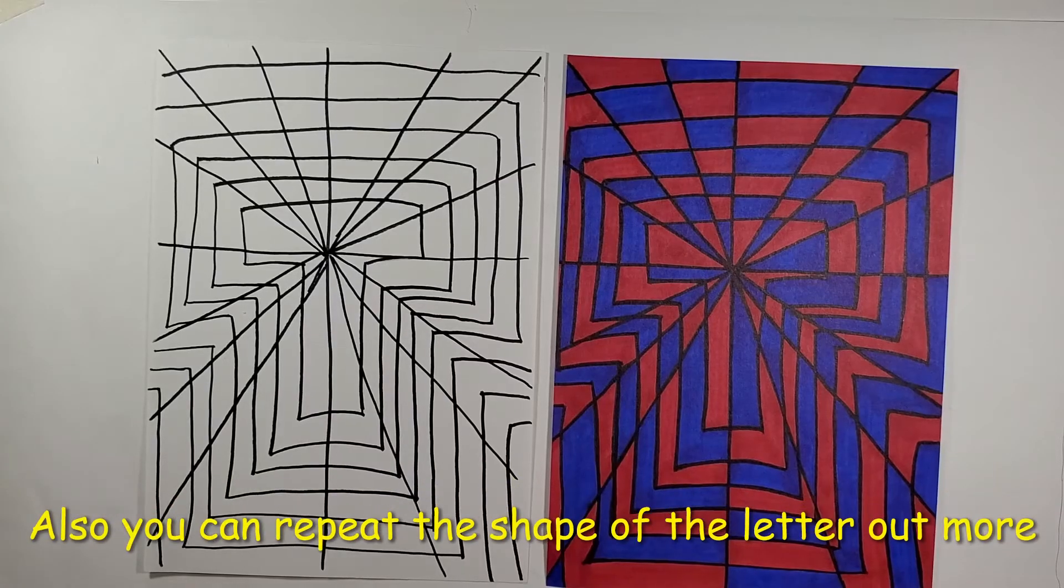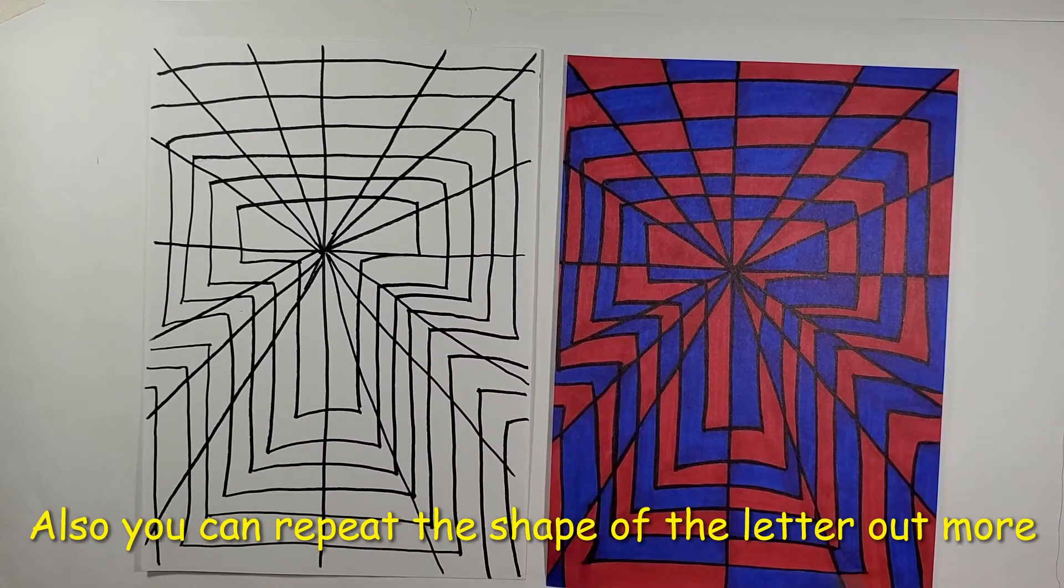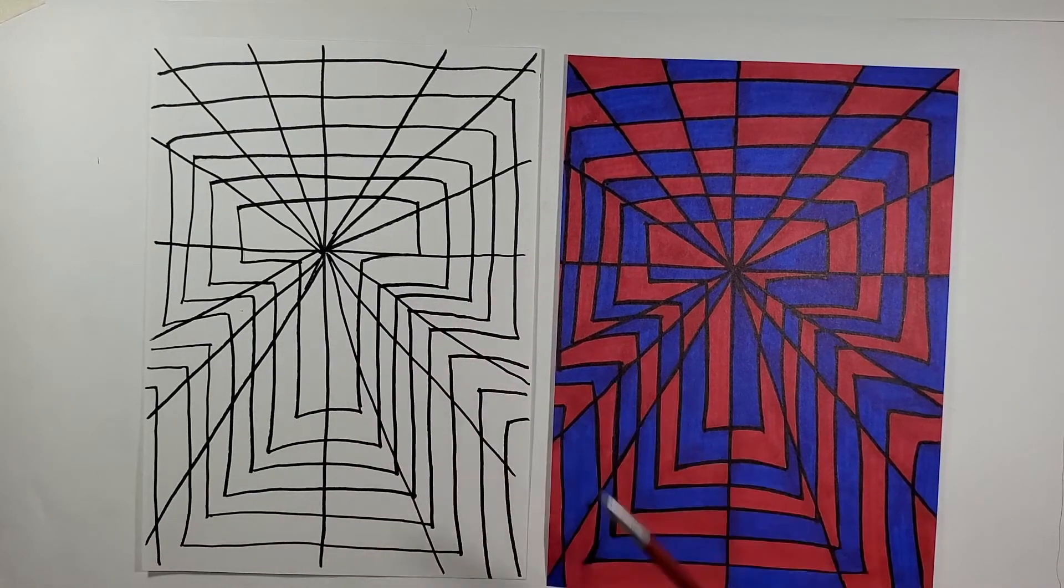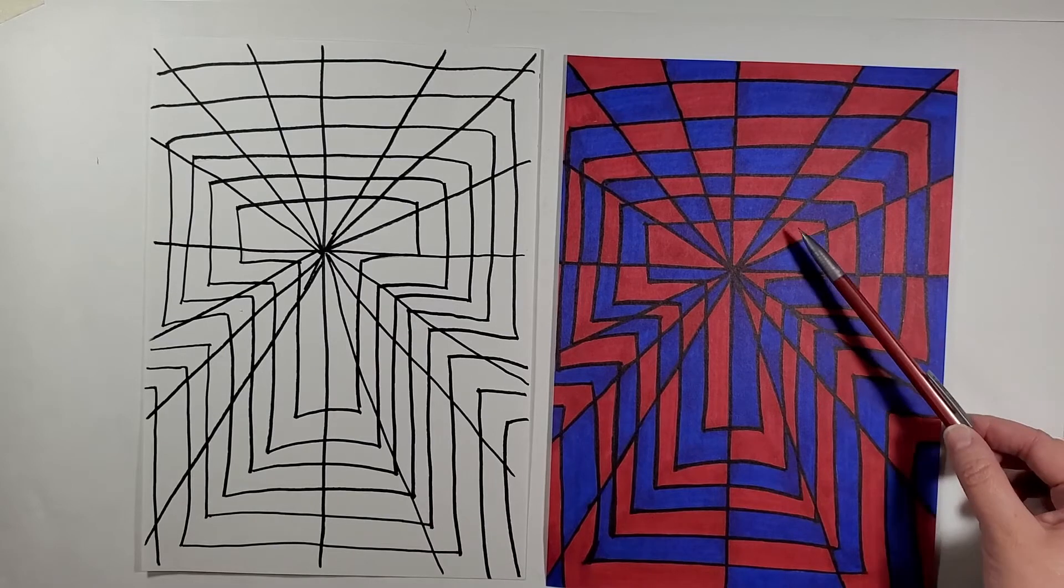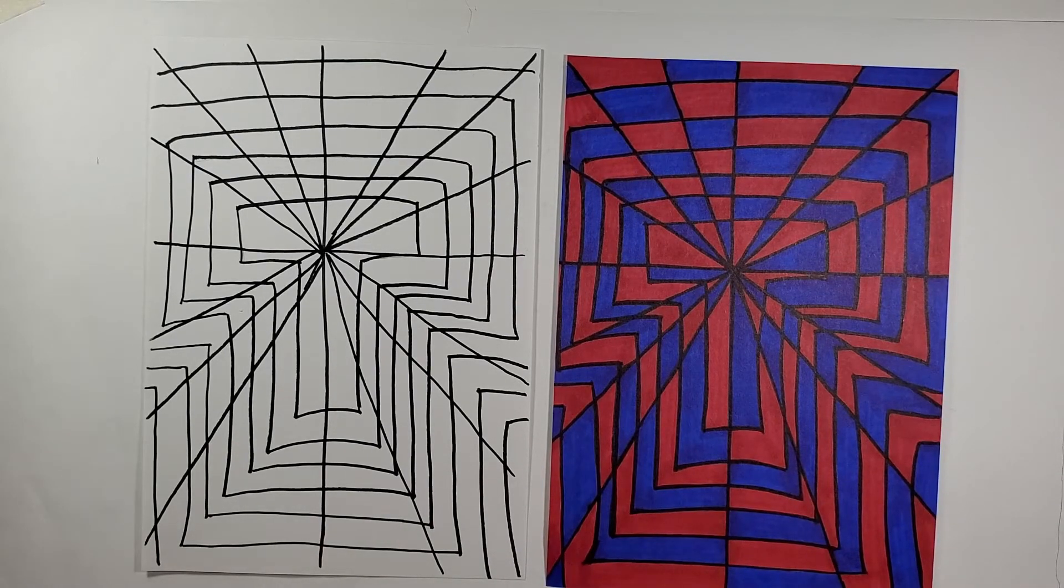Here is another option that you can do. You can repeat the letter out even more, leaving smaller spaces in between, and still use a one-point with the lines coming out to get our starburst effect. Still use a light color and a dark color, and then I outlined it in Sharpie.